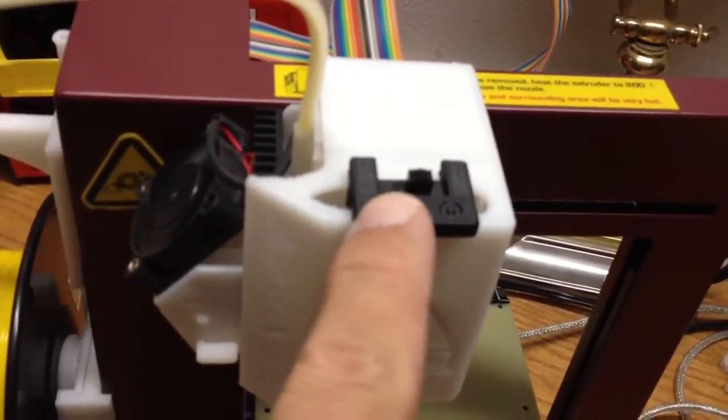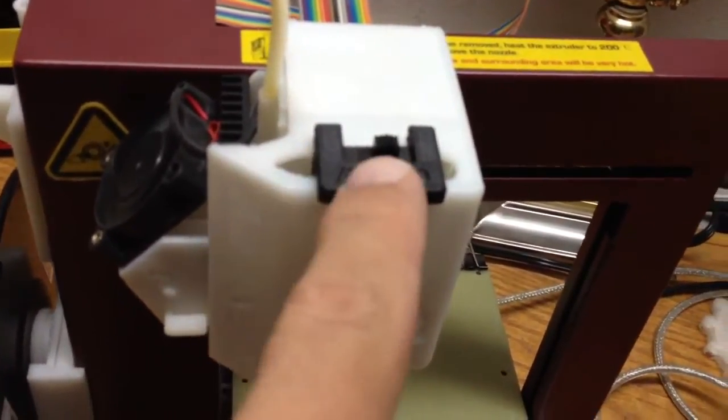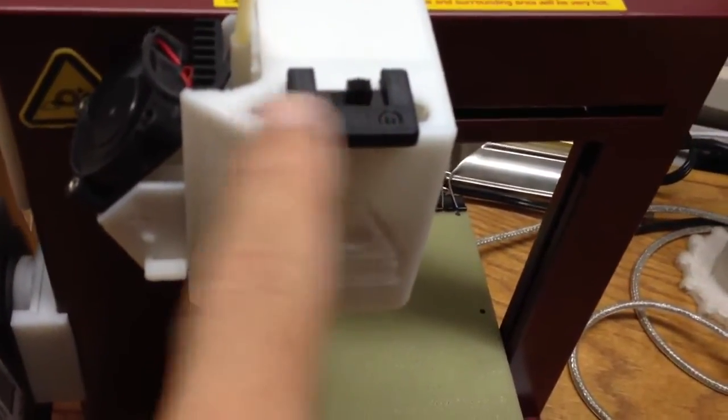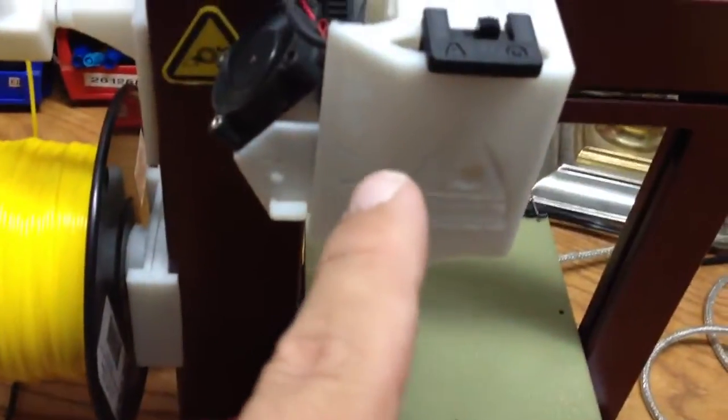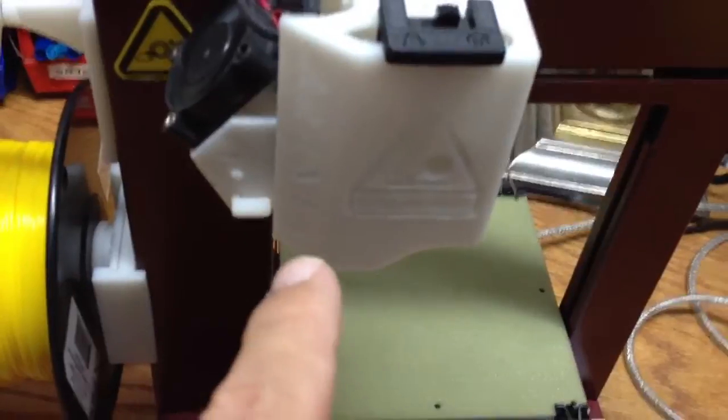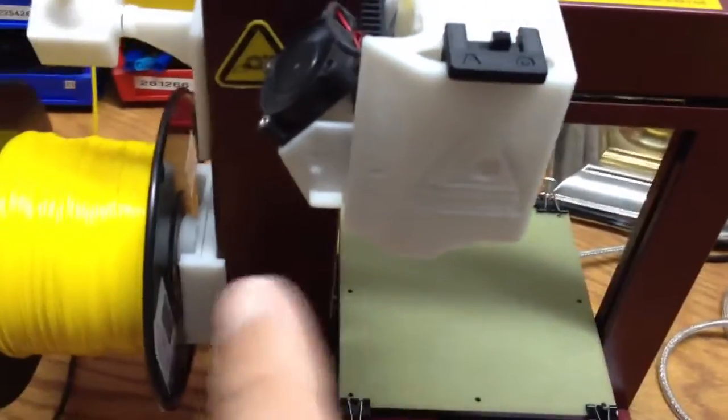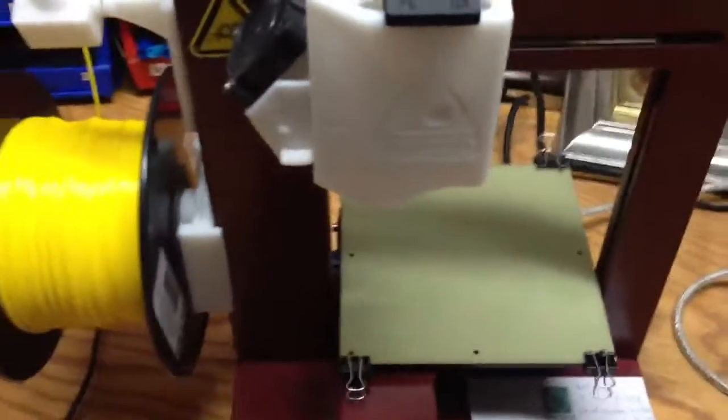it changes the resistance. There's a resistor in line. It changes the resistance to trick it into extruding at a lower temperature. So instead of extruding at 260 degrees Celsius, it's extruding more like 220, 230, something to that effect, I believe.